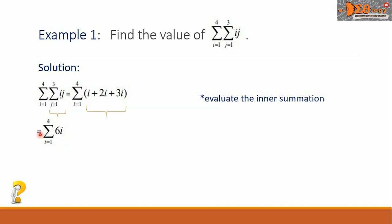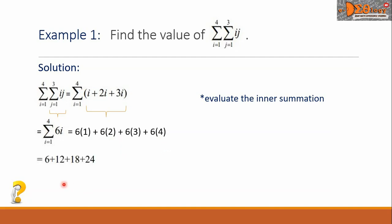We now have the summation of six i where i equals one up to four. When we expand this we get six times one, plus six times two, plus six times three, plus six times four. Simplifying each product gives six plus twelve plus eighteen plus twenty-four, and the final answer is sixty. This is the value of the double sums.